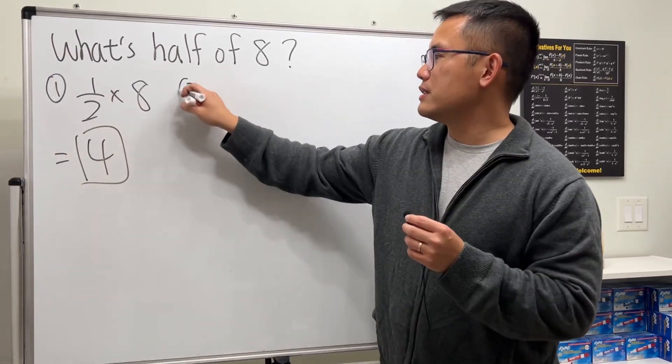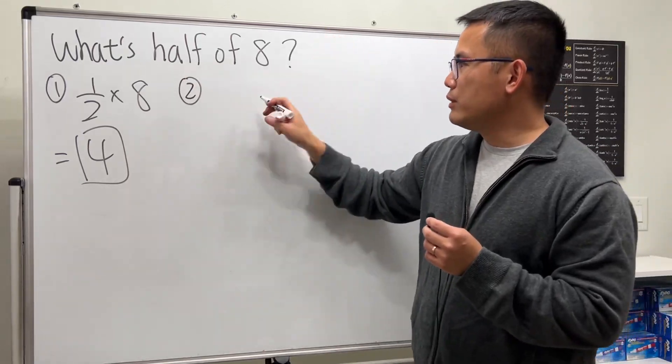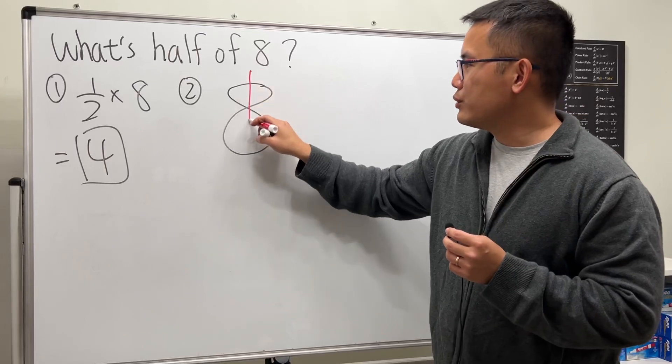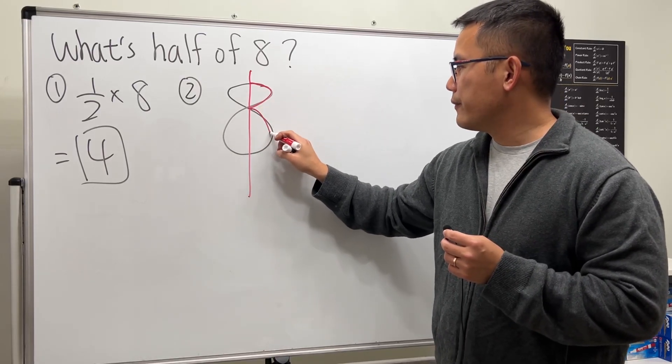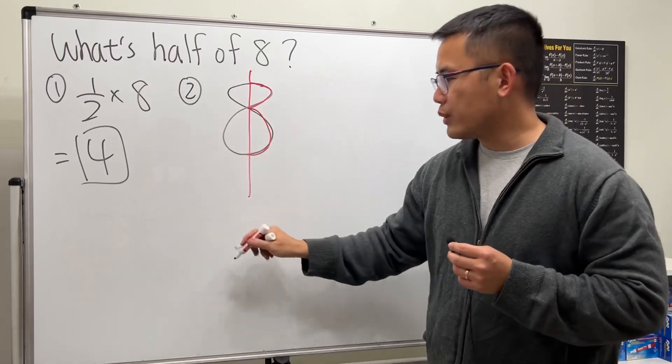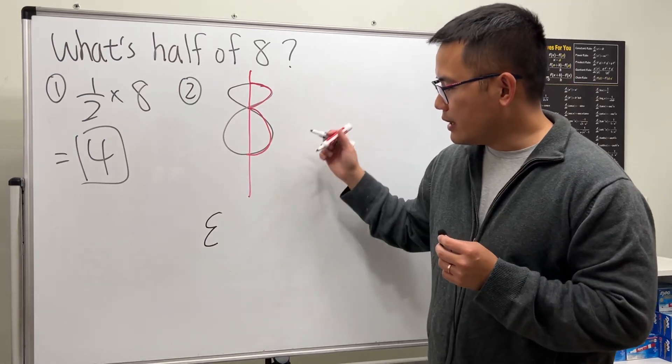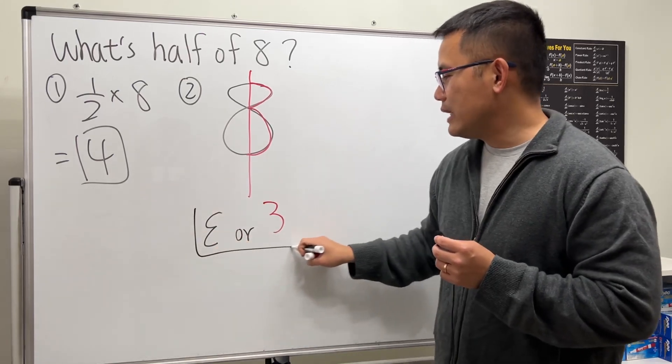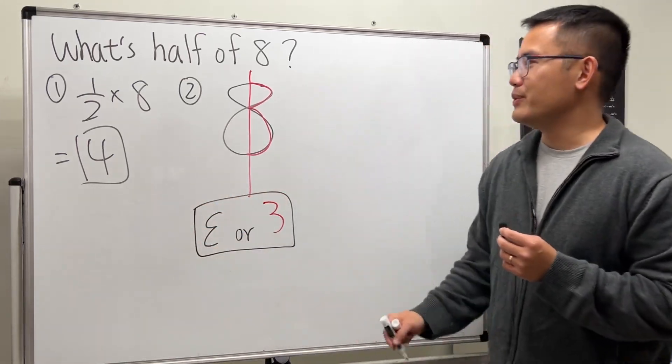Now, number 2, this is for the people who like geometry. Have a look at the number 8. Half, just cut into half, and then take the right-hand side, for example. If you want to take the left-hand side, you will get epsilon. If you take the right-hand side, you will get 3. So it's either epsilon or 3, so up to you.